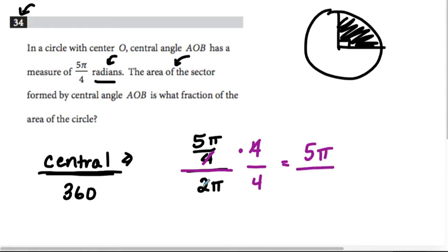In the bottom fraction, you'd multiply 2π times 4, and you'd get 8π. Simplify, and you'd get the fraction is 5/8.